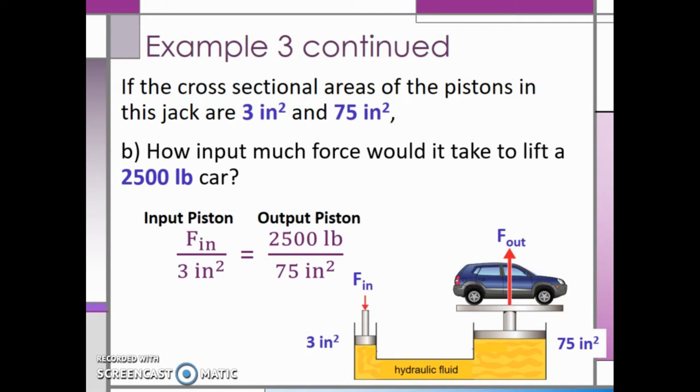Cross multiplying on the diagonal, we will multiply 2500 pounds by 3 square inches and divide by the 75 square inches that we have left over. This will give us an input force of 100 pounds. Again, this makes sense because the input area is smaller, so the input force should also be smaller.